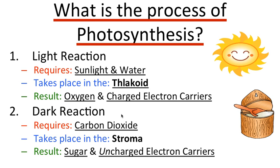The light reaction also creates charged electron carriers — ATP and NADPH — which then power the next reaction, the dark reaction. The dark reaction also requires carbon dioxide, takes place in the stroma, and results in sugar. That's the whole point of photosynthesis — to make sugar. The uncharged electron carriers get recycled back to the light reaction to become charged again.